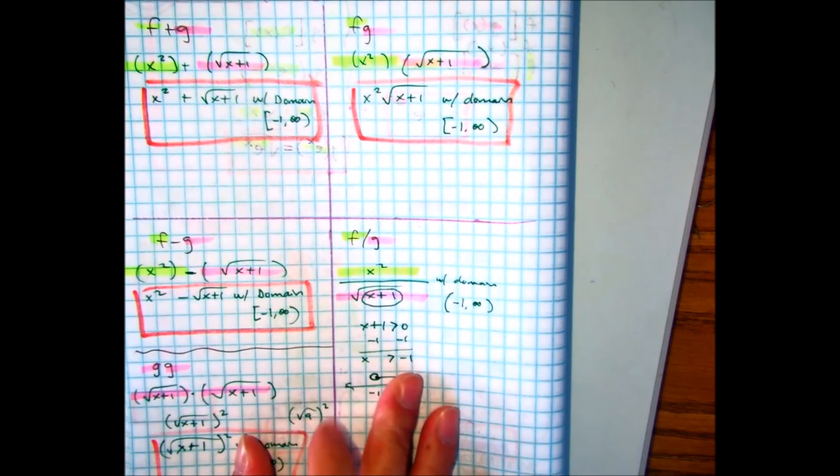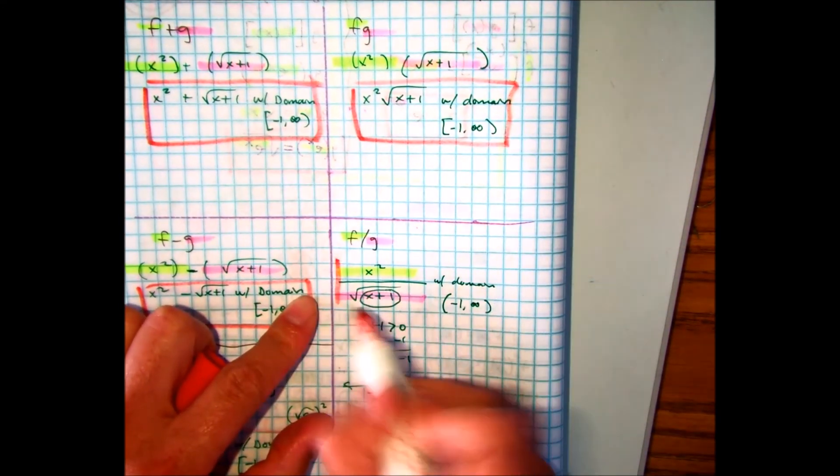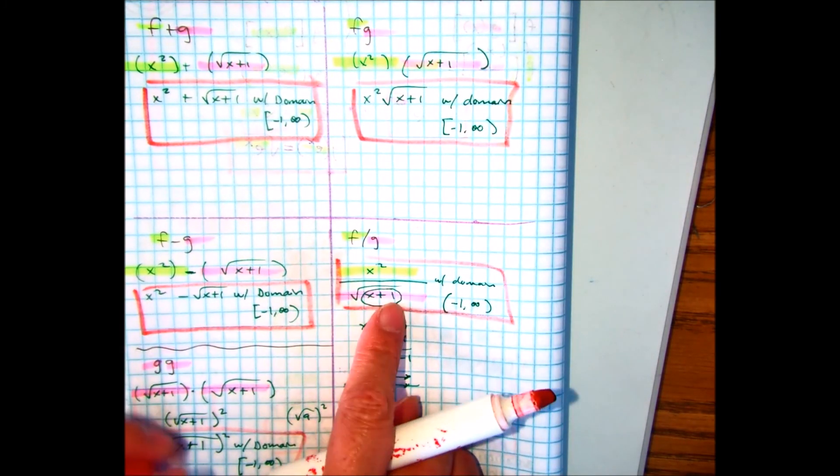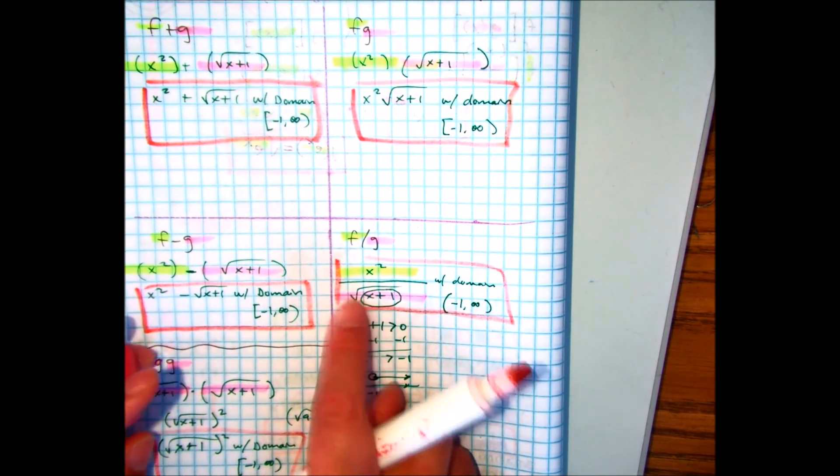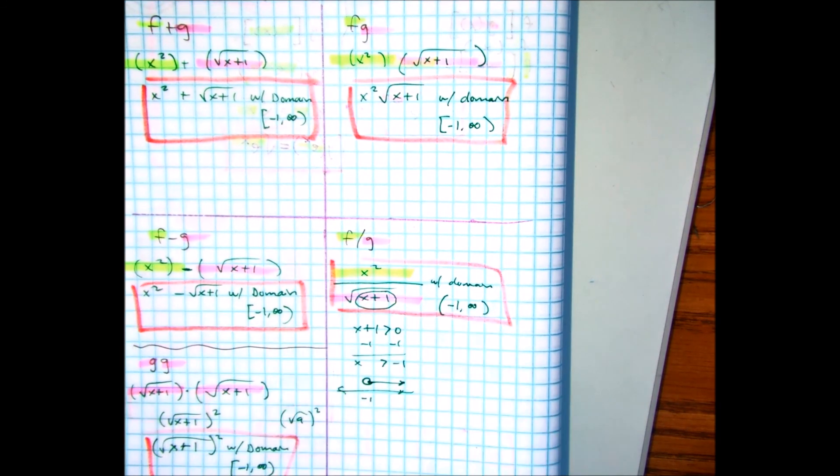The reason why this problem is a parentheses and not a bracket, just think about it. If you picked negative 1, class, what's negative 1 plus 1? Square root of 0 is 0 undefined bad, right? That's why we're not including negative 1.